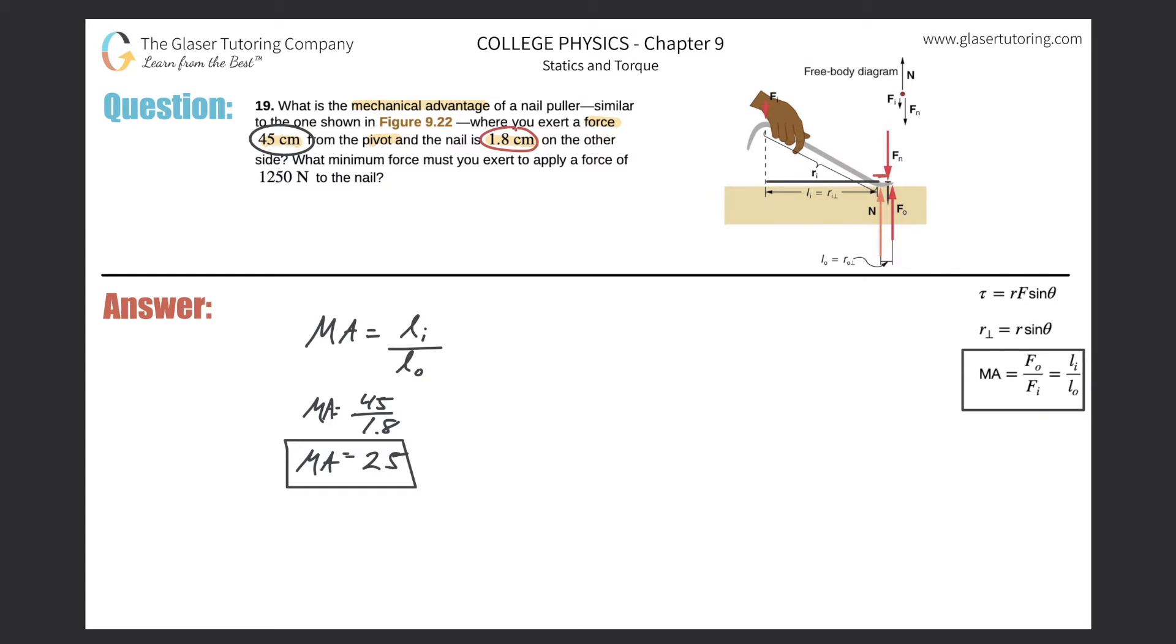That takes care of the first part. The second part says: What minimum force must you exert to apply a force of 1250 newtons to the nail? Now we're using the same formula, but since we know the mechanical advantage is 25, I'll use the first half of this equation: MA = output force over input force.